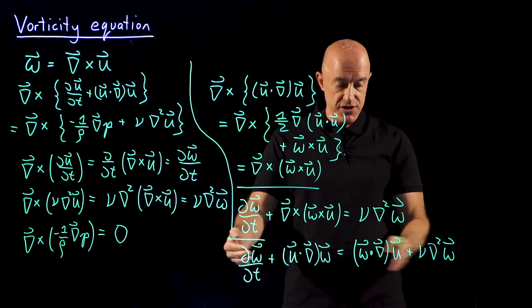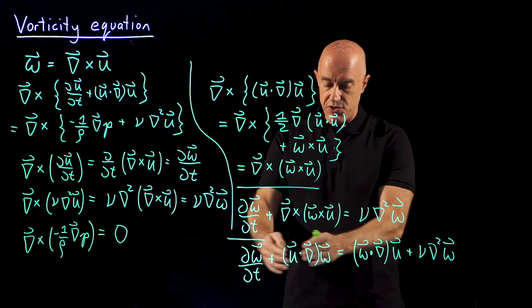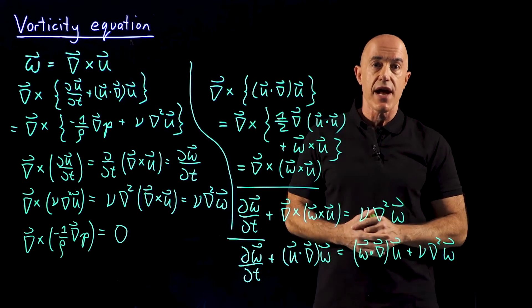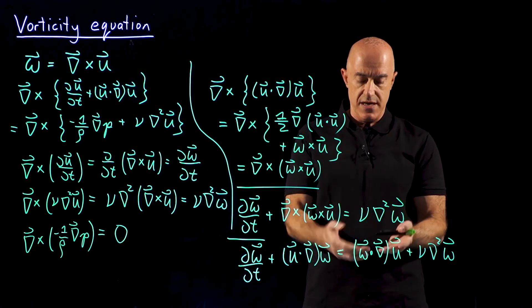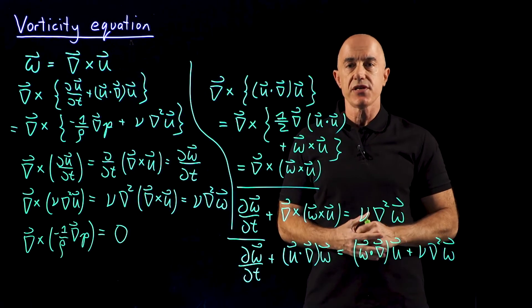This extra term, this kind of looks like the Navier-Stokes equations, except that you replace u by the vorticity, but there's this extra term on the right-hand side. This is called, in fluid mechanics, this is called the vortex stretching term,